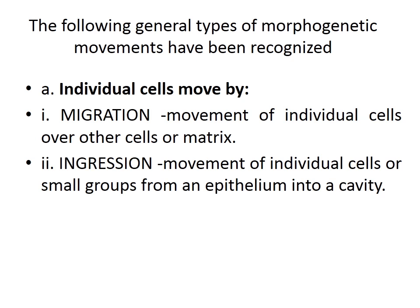The blastodermal layer rearranges itself, displacing the blastocoel. This rearrangement takes place by movement of cells — either individually or in groups or layers. Individual cell movements include two processes: migration, which is the movement of individual cells over other cells or matrix, and ingression, which is the movement of individual cells or small groups from an epithelium into a cavity.